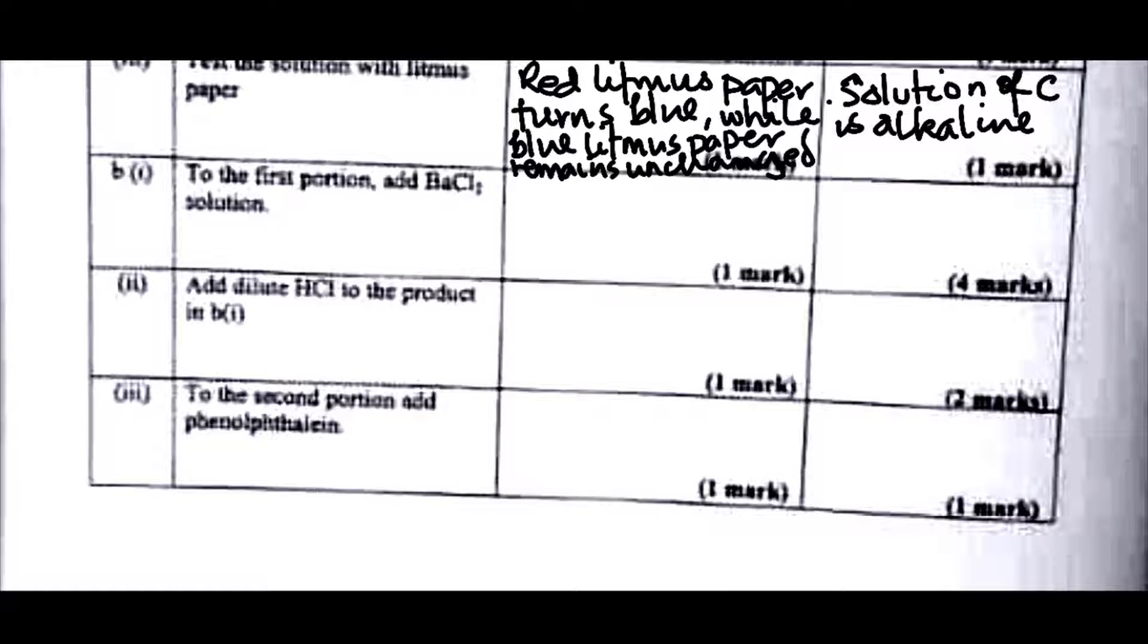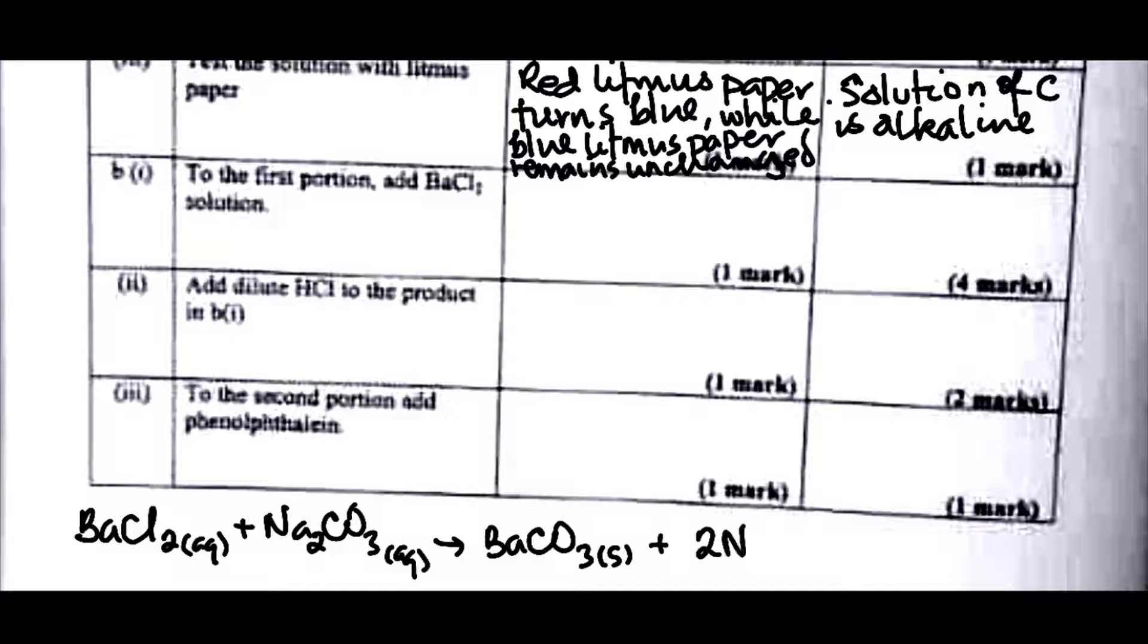Next test says to the first portion, we are told to divide into two portions, right? So to the first portion add barium chloride solution. Of course when we add barium chloride, given that it's a carbonate, the chemistry of the reaction will be BaCl2 aqueous plus Na2CO3 aqueous, this will give us BaCO3 solid plus 2 NaCl aqueous. This is a double decomposition. So this will be a white precipitate. So white precipitate forms.